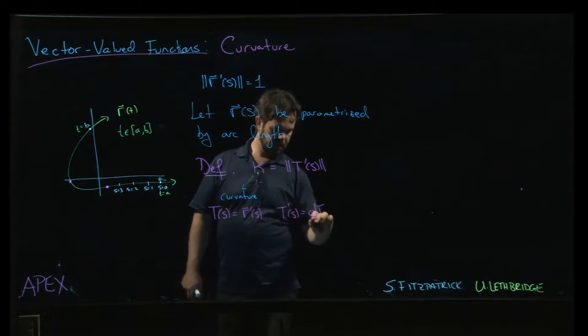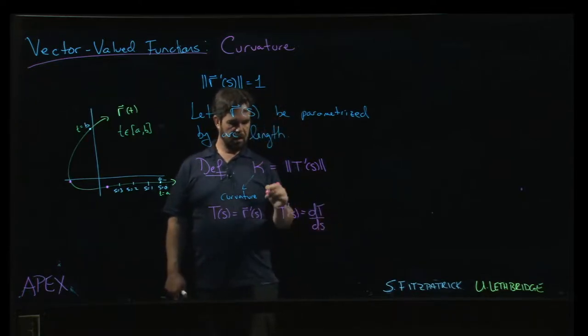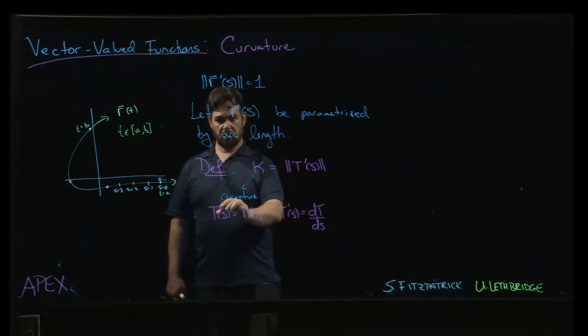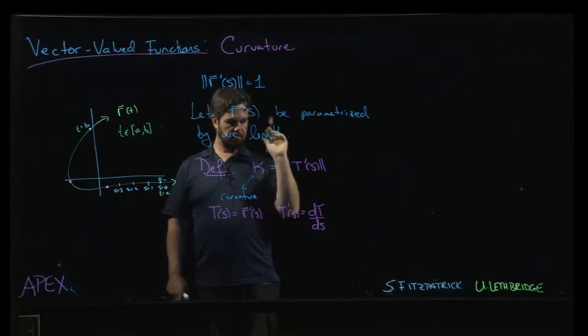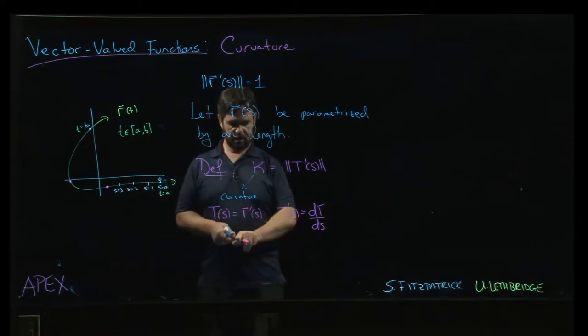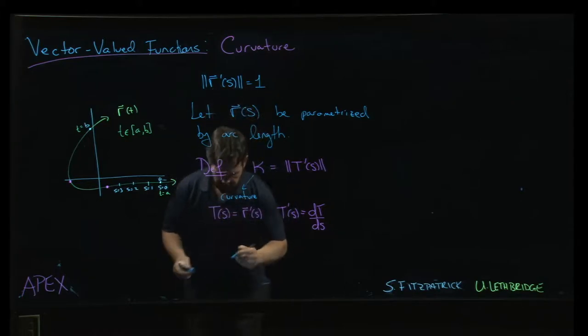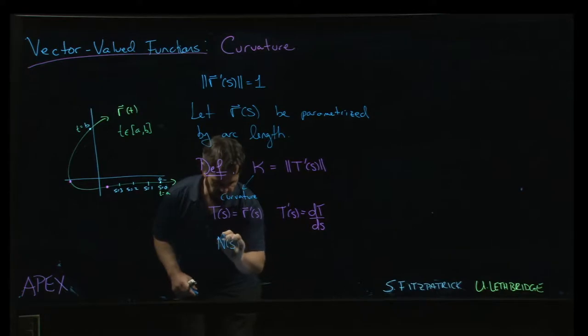T is our unit tangent vector. What is T prime? T prime was about the unit normal vector. Remember that we had this notion of the unit normal vector. If we're using the arc length parametrization, that unit normal vector is T prime of s divided by the magnitude of T prime.